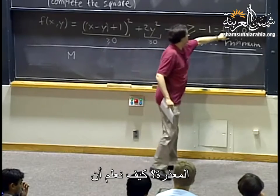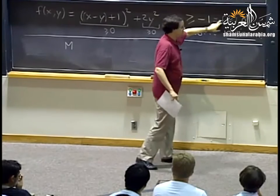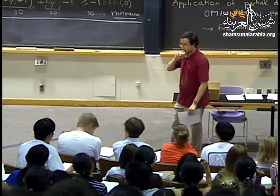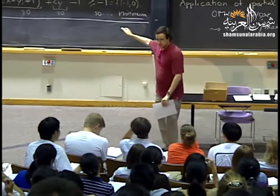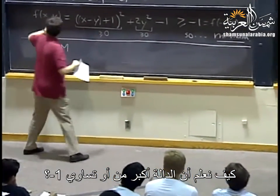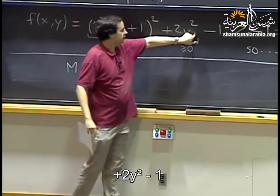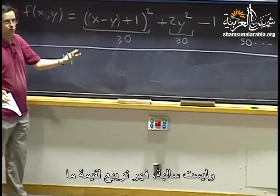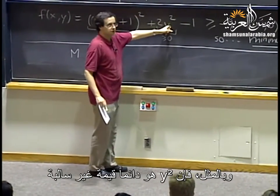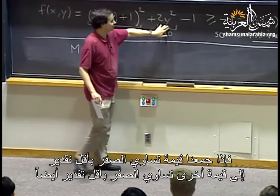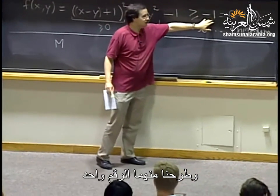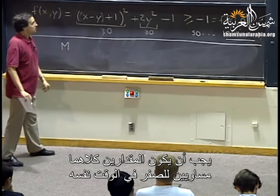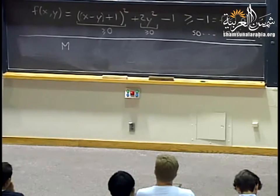How do we know the function is always greater or equal to negative 1? We wrote f as something squared plus 2y² minus 1. A square is always non-negative, and y² is also always non-negative. So adding something at least 0 plus something at least 0 and subtracting 1 gives always at least minus 1. The only way to get minus 1 is if both squares are zero at the same time.